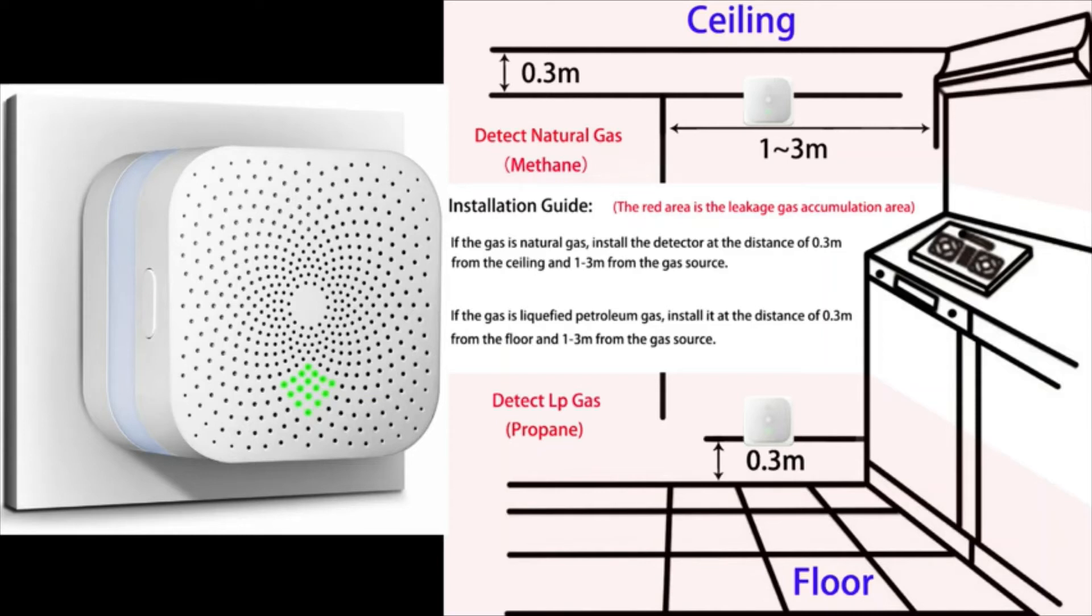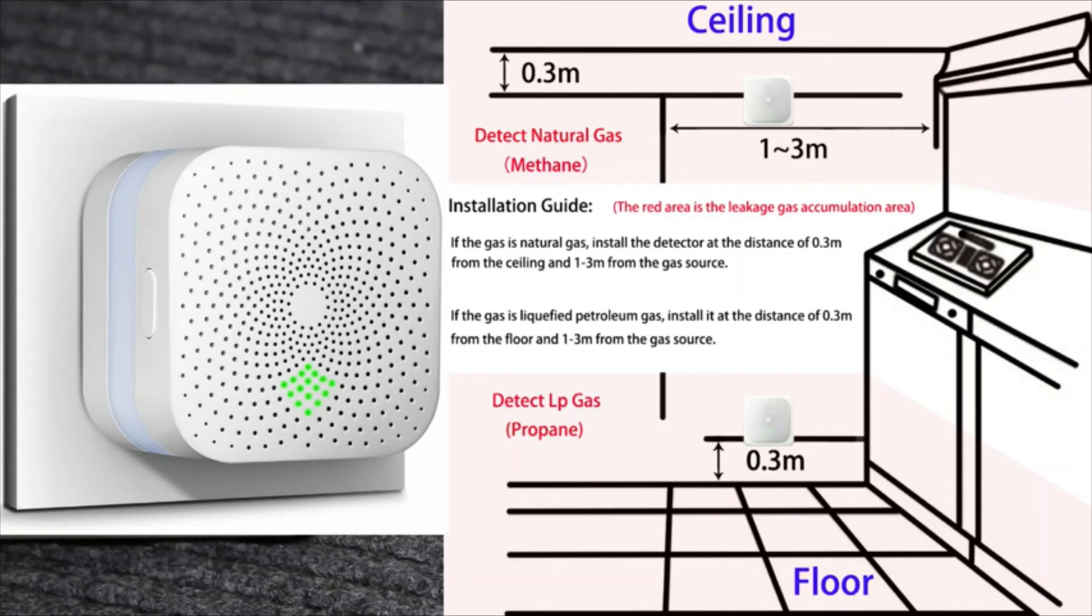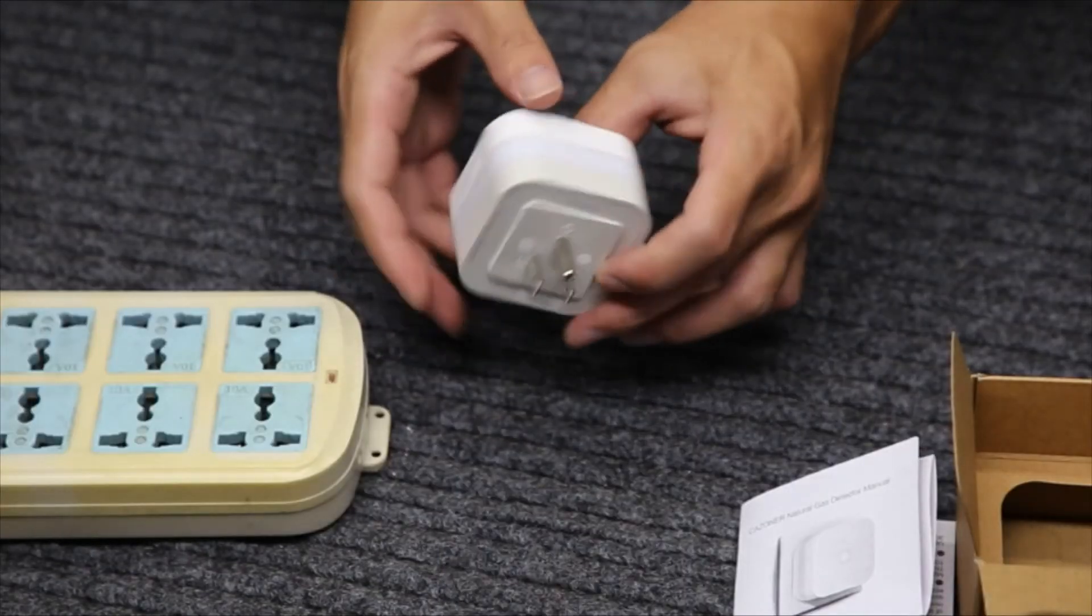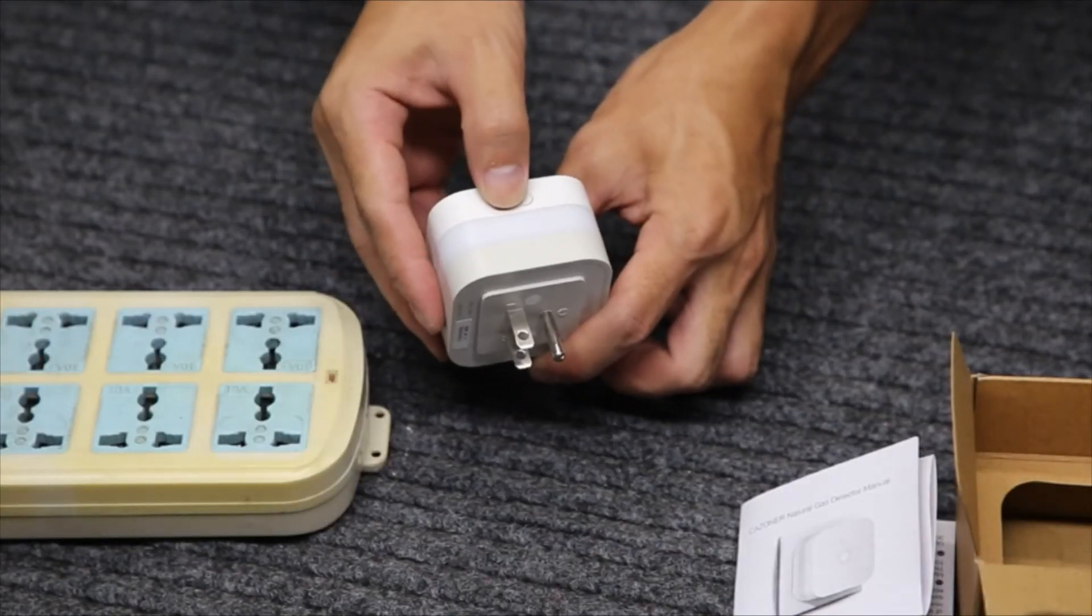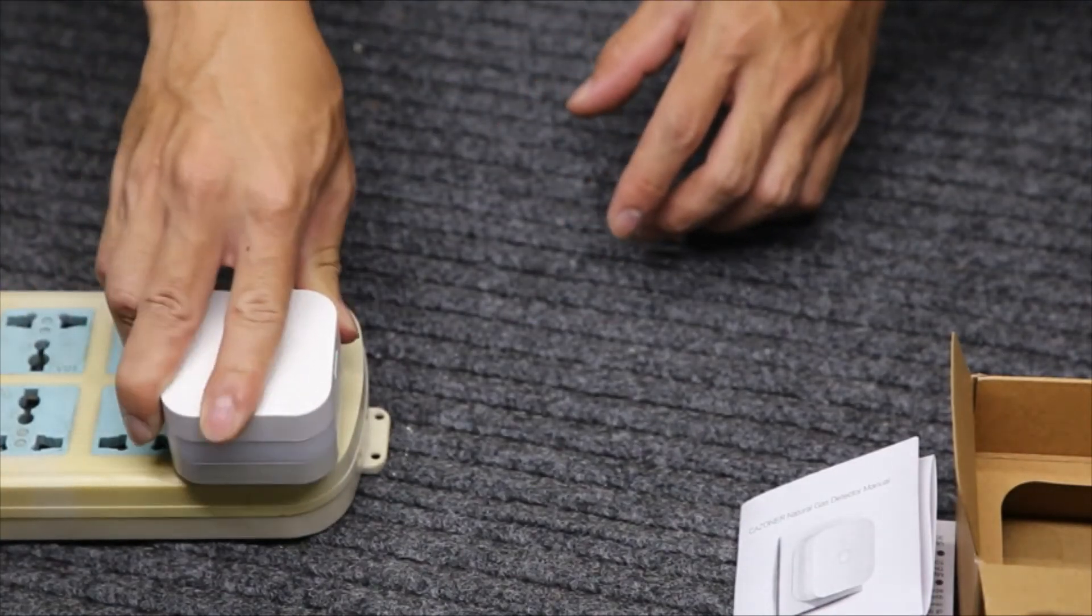Make sure you check this out before plugging our Kazona gas detector in your kitchen. Then let's see how it works with power on. There is a button here. Let's plug it on the socket and see what's gonna happen.